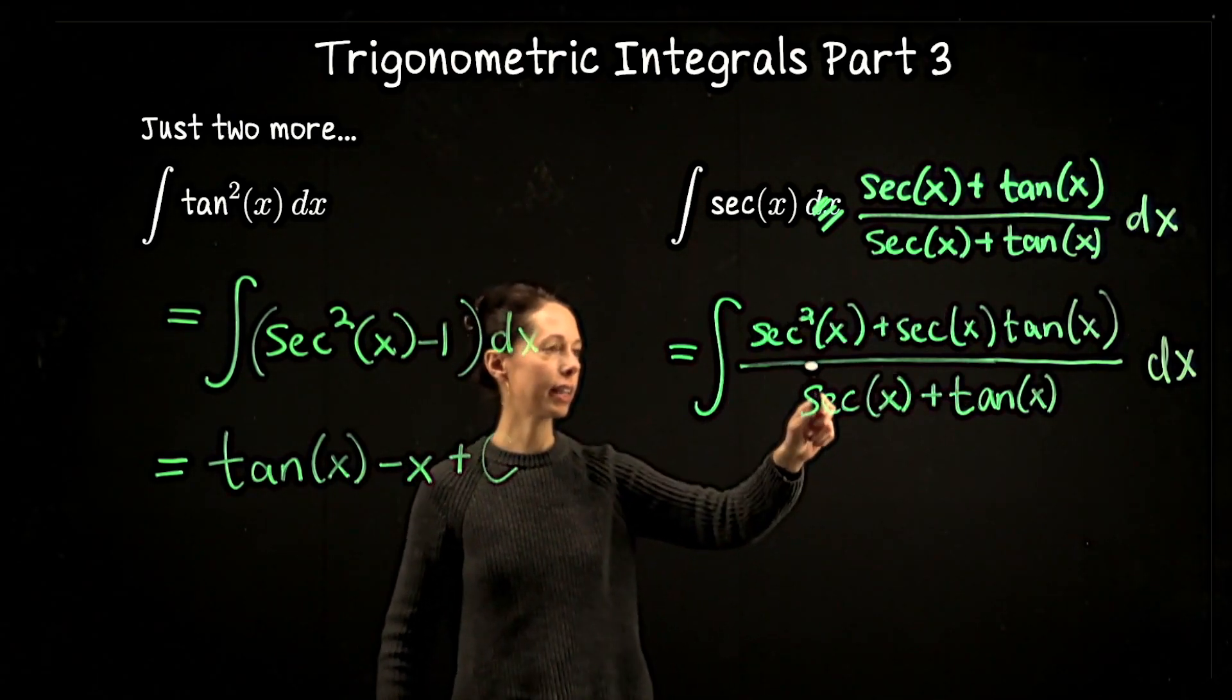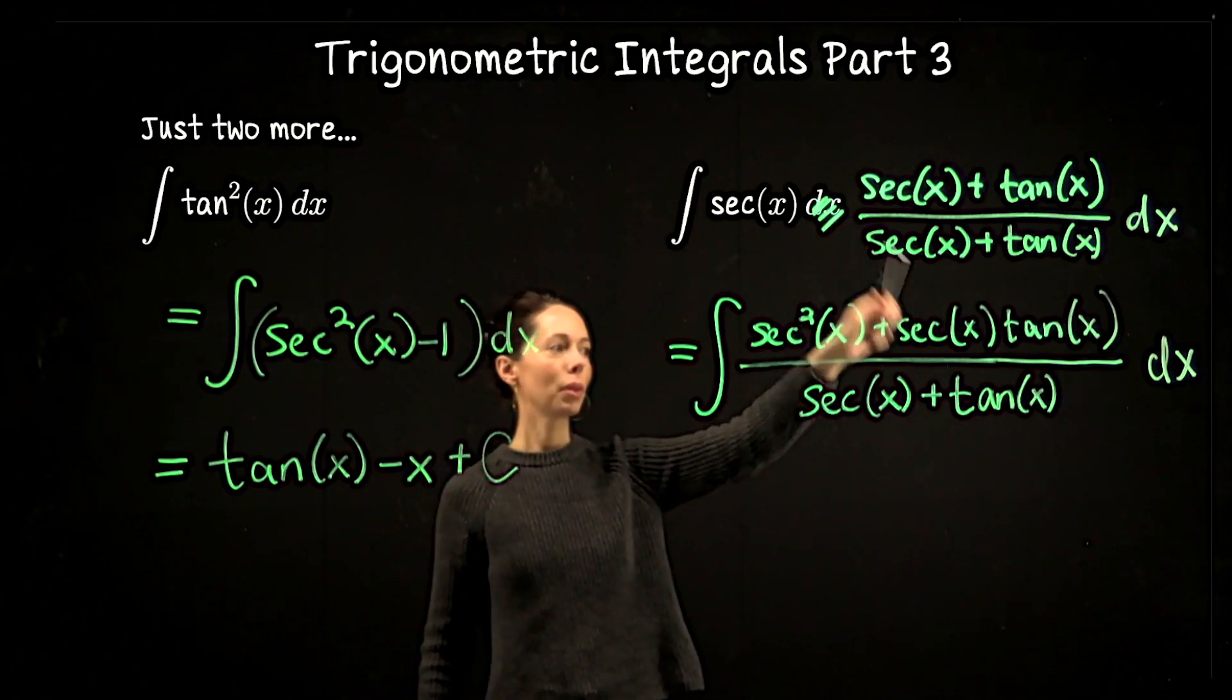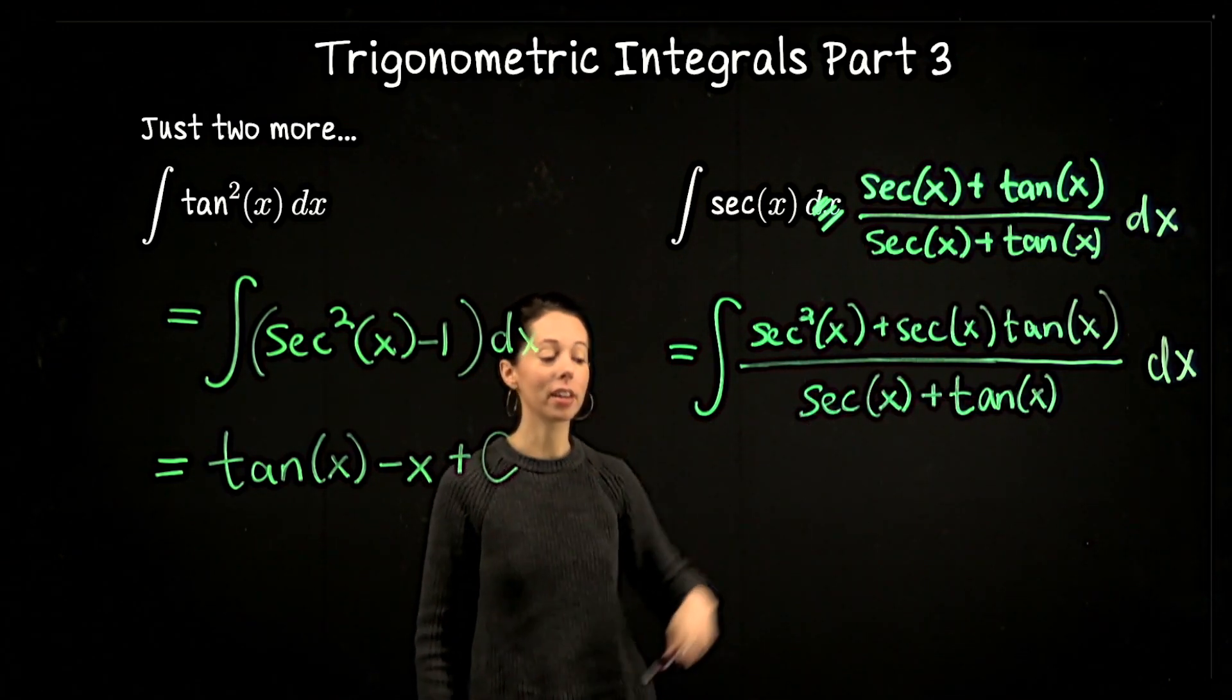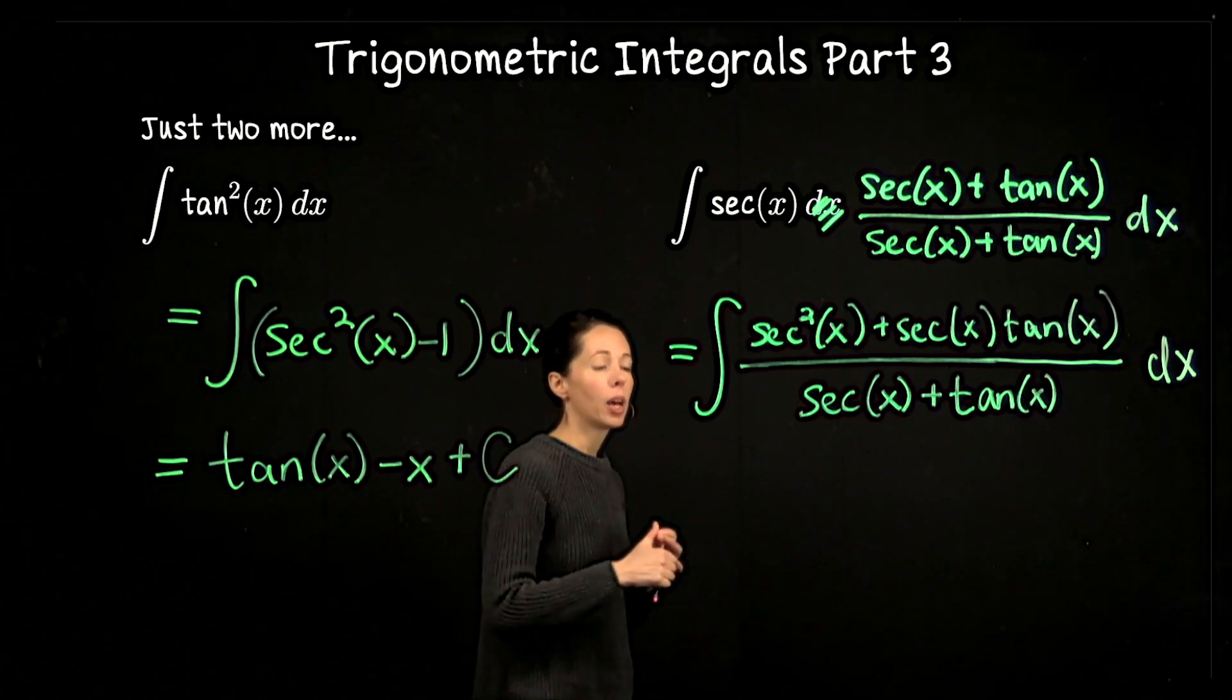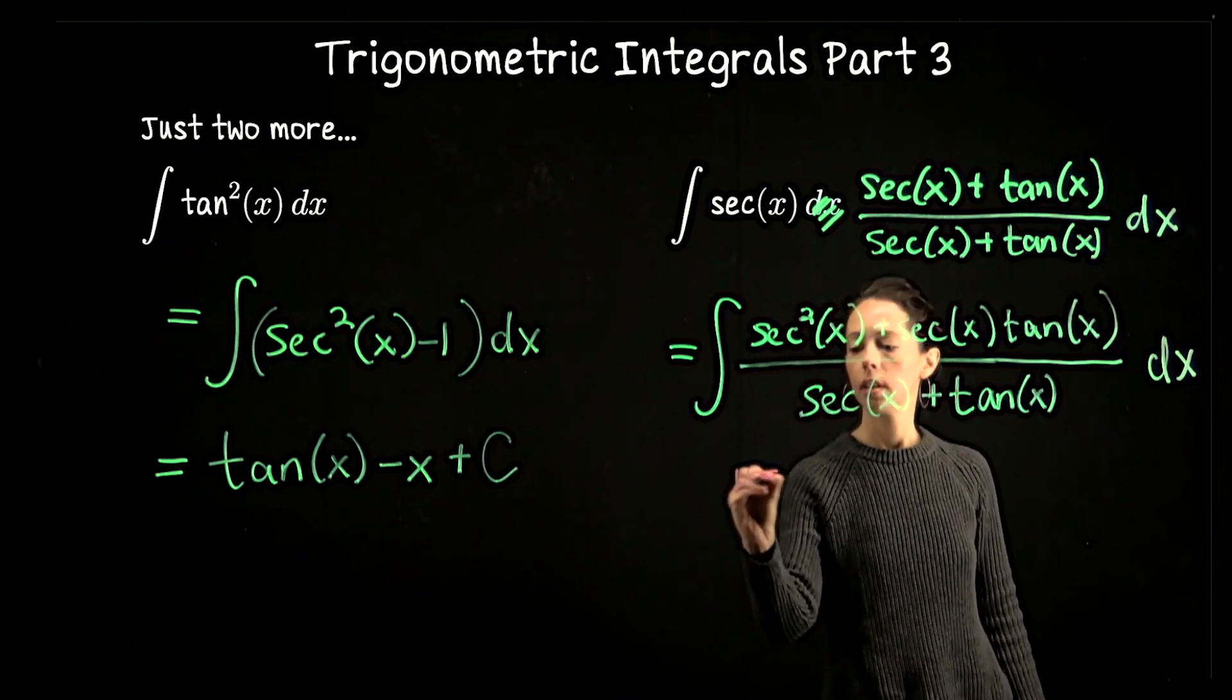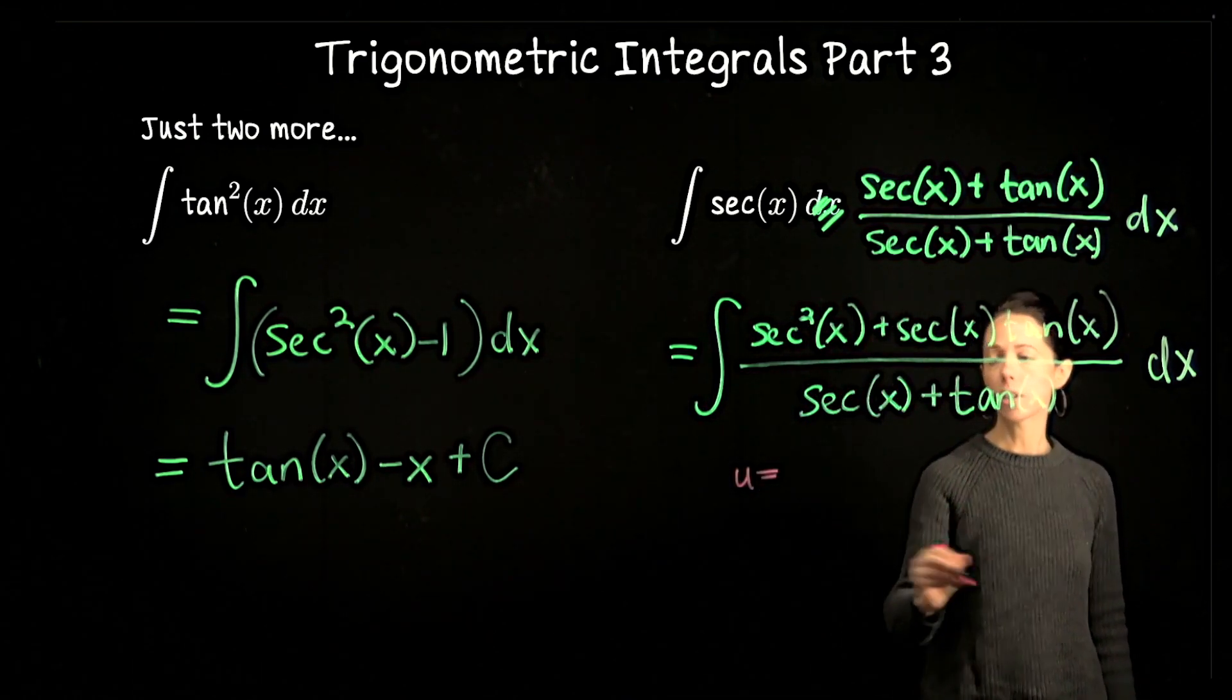The numerator looks like the derivative of tan(x) plus the derivative of sec(x). That's exactly the pair of functions in our denominator. So we'll do a u-substitution and let u equal the denominator. We'll say u = sec(x) + tan(x).